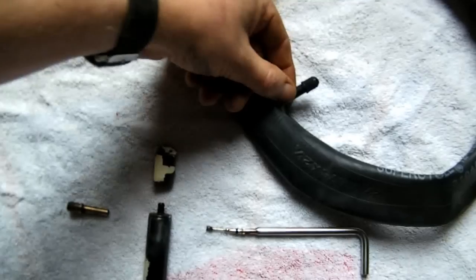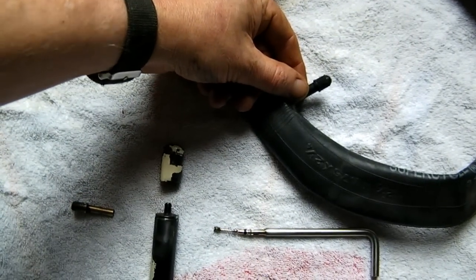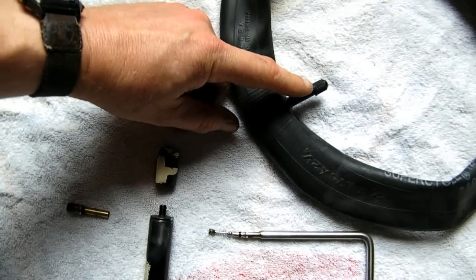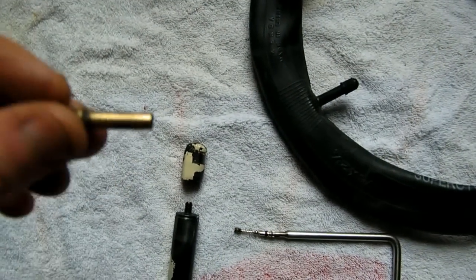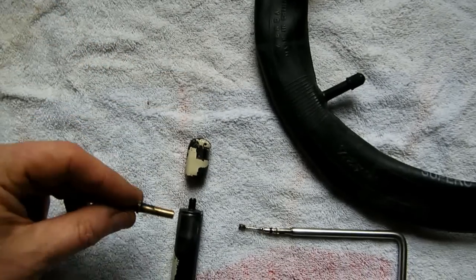To get the job done, harvest a Schrader valve off an old inner tube, scrape the rubber off with a knife and then polish the end clean with some sandpaper.